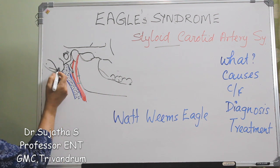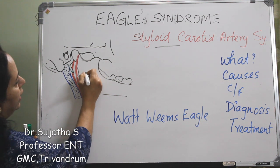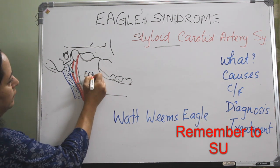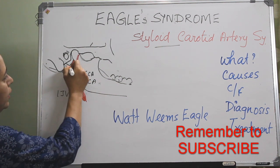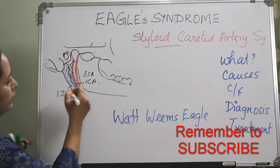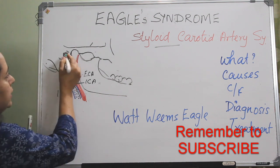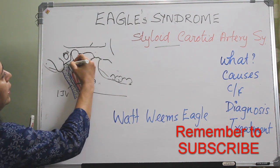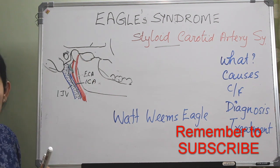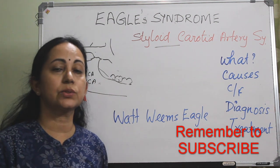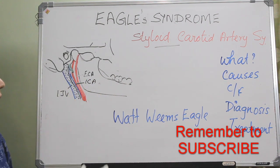In the skull base, here comes the mastoid, mandible, external carotid artery, internal carotid artery, IJV, and cranial nerve 10 or the vagus nerve, along with the external auditory canal bony part — and this is the styloid process. Eagle Syndrome is due to the elongated styloid process or calcification of the stylohyoid ligament.